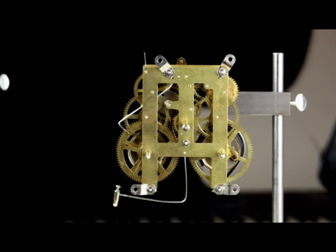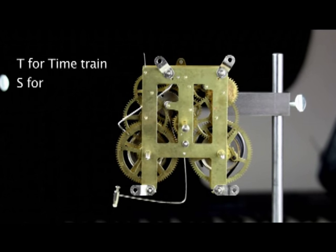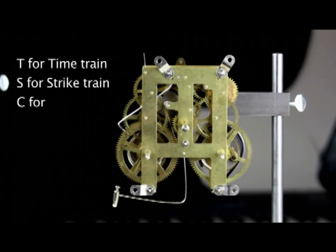To solve this problem, we put a T in front of the wheel number to indicate a wheel in the time train, an S for the strike train, and a C for the chime train.